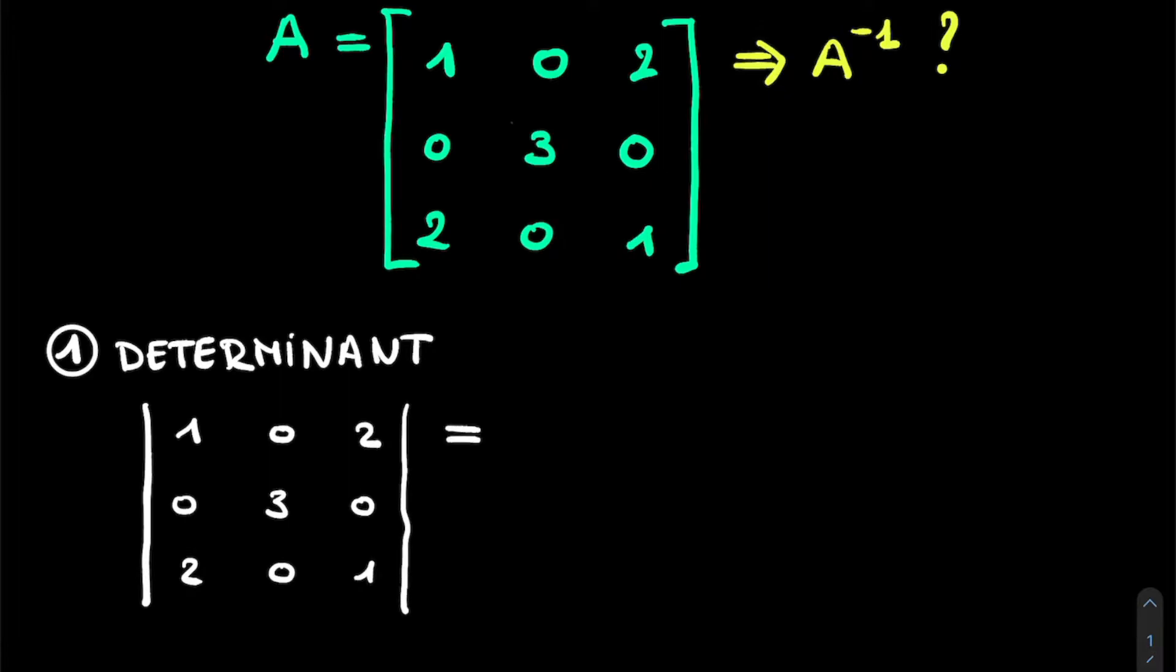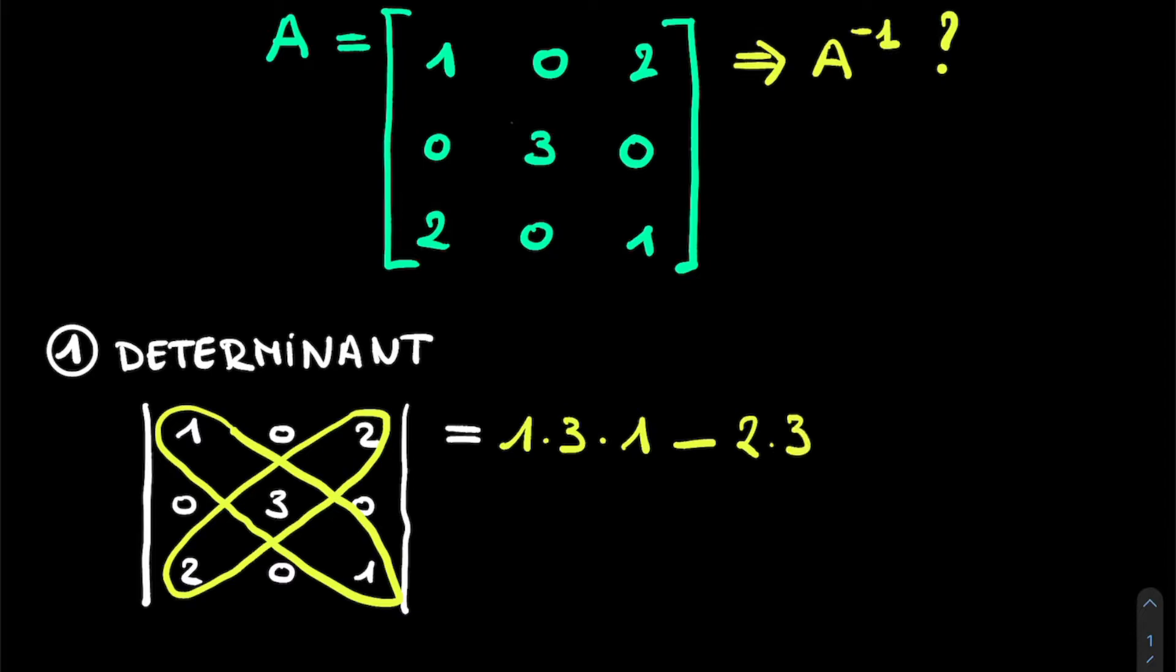Calculating the determinant of a general 3x3 matrix already involves quite some work. However, because we have this special structure, we can calculate the determinant by doing the following. We take the product of the diagonal elements, which is simply 1 times 3 times 1, and we subtract from this the product of the elements on the off-diagonal, which is minus 2 times 3 times 2. This simply gives us 3 minus 12, which is minus 9.